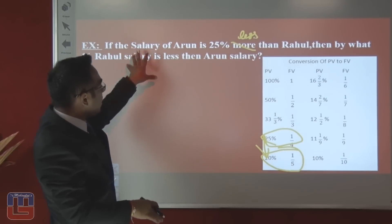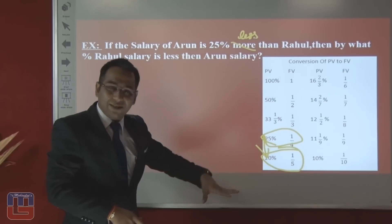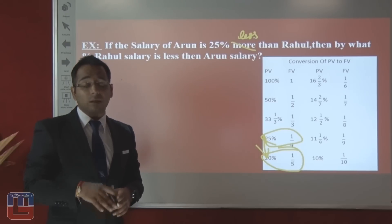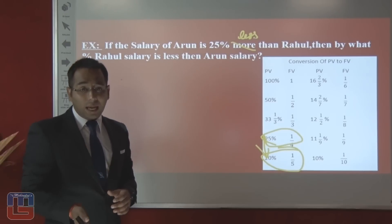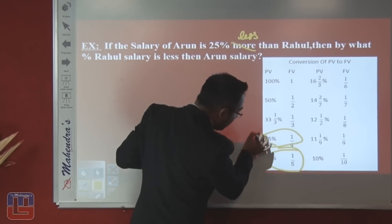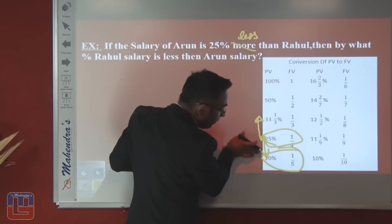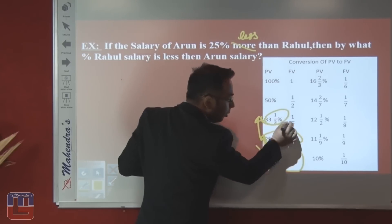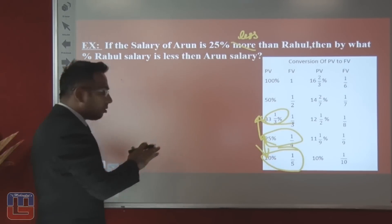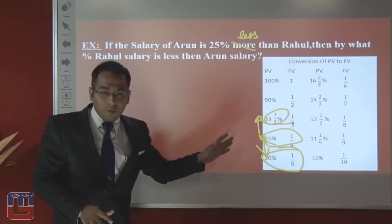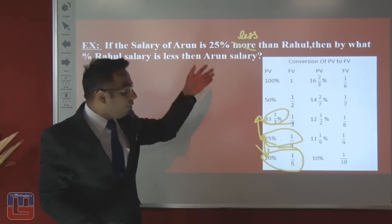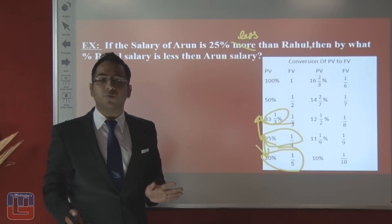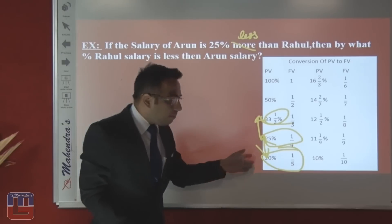If the question instead says Arun's salary is 25% less than Rahul, then Rahul is earning more than Arun. Since Rahul is earning more, we go up in the table. Above 1/4 is 1/3, which means 33 and 1/3%. So the rule is: if one person is earning more, the other earns less — go down in the table. If one earns less, the other earns more — go up in the table.